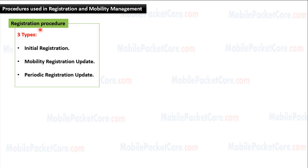First, let's learn the registration procedure. The registration procedure has three types: the Initial Registration Procedure, the Mobility Registration Update Procedure, and the Periodic Registration Update Procedure.